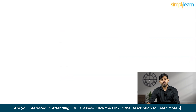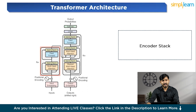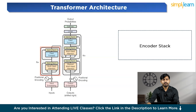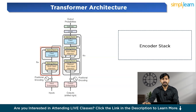Let us understand the transformer architecture. First, we have the encoder stack. As you can see in this diagram, the encoder takes the input sequence — suppose a sentence in English — and creates a representation Z that summarizes all the important information about the sequence. The encoder is made up of two components: multi-head self-attention, which looks at the input sequence and finds relationships between words; and a feed-forward network, which processes the output from the self-attention mechanism to further refine the information. The encoder doesn't change the length of the input sequence — it just transforms it into a format that the decoder can work with.